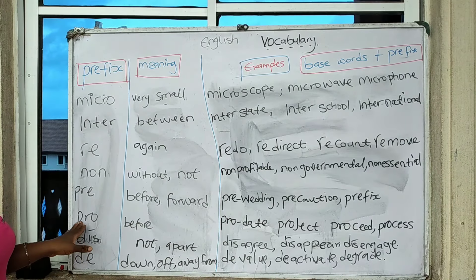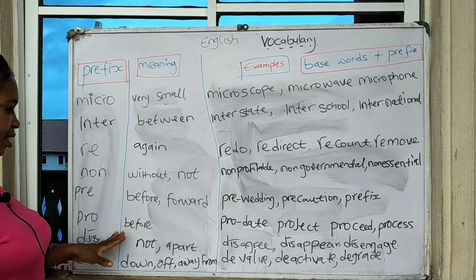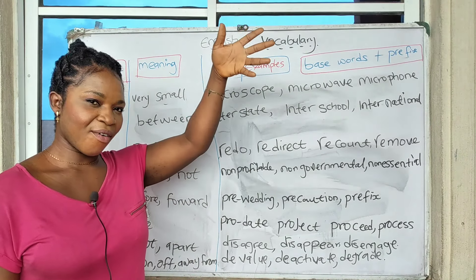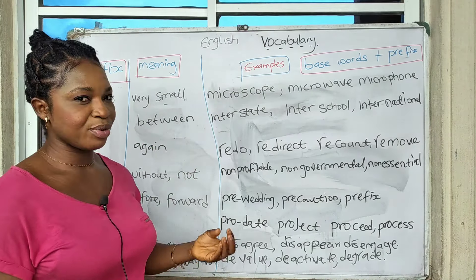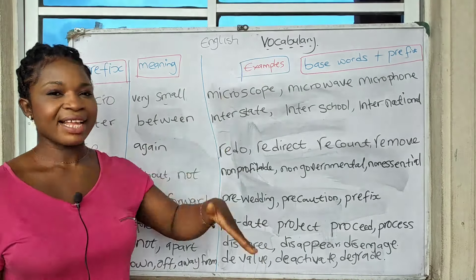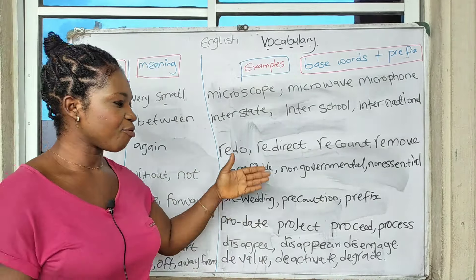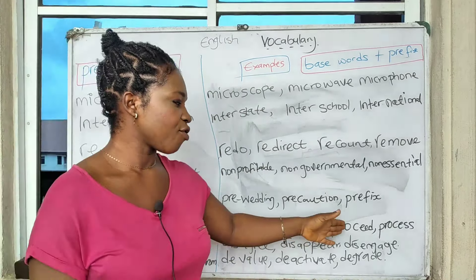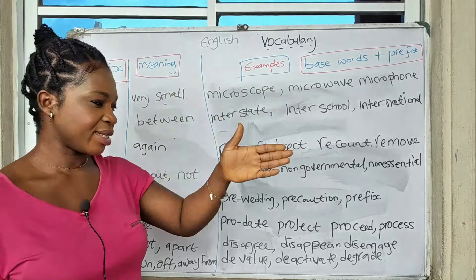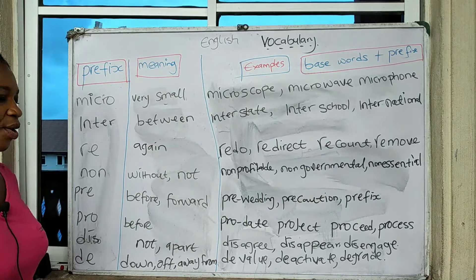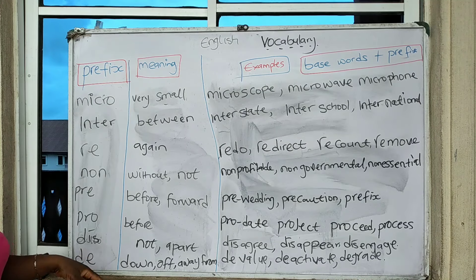'Pro' simply means before — ahead, at the front, yet to be done. We have 'pro-date,' meaning the date at the front. We have 'project' — it is at the front, ahead. We have 'proceed' and 'process' — working forward. So 'pro' indicates something ahead or in front.